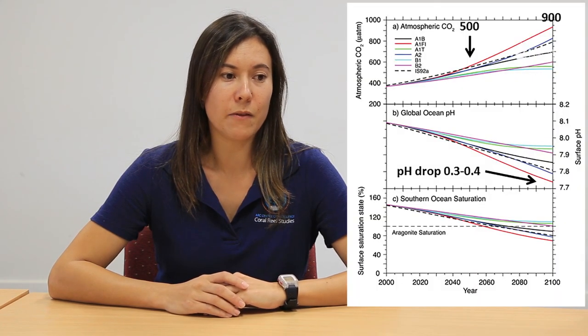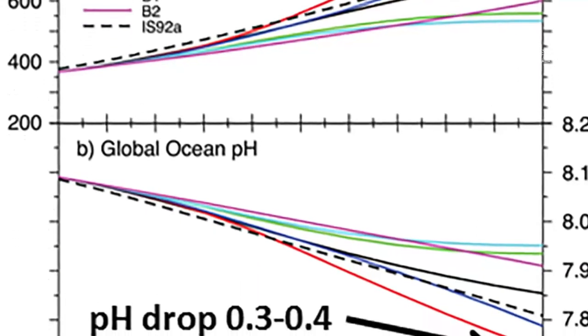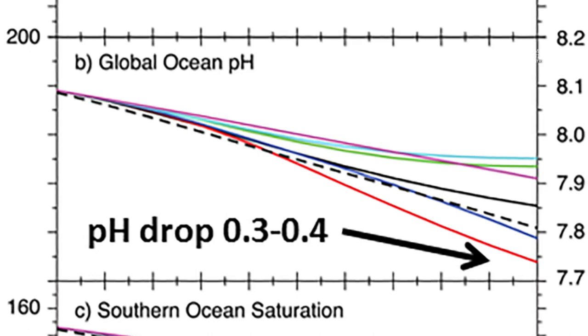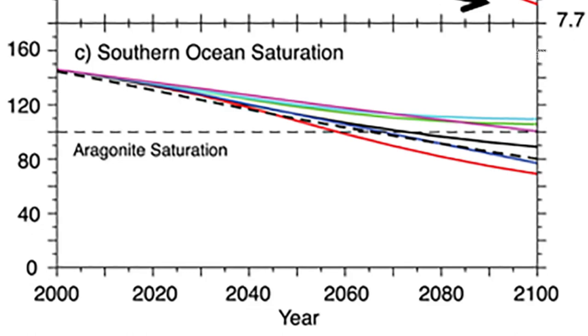The Intergovernmental Panel on Climate Change is the organisation that produces projections of our future climate. We've actually been tracking on some of the worst case projections for the last 20 or so years. If you look at the graph on the right, you can see that if we continue to follow this path, we'll reach about 900 parts per million of atmospheric carbon dioxide by the end of this century. This is associated with the pH drop of about 0.3 to 0.4 units, and also with a decrease in something we call the saturation state.